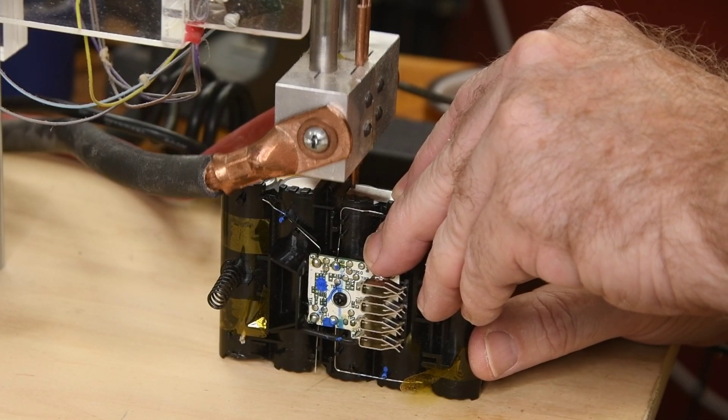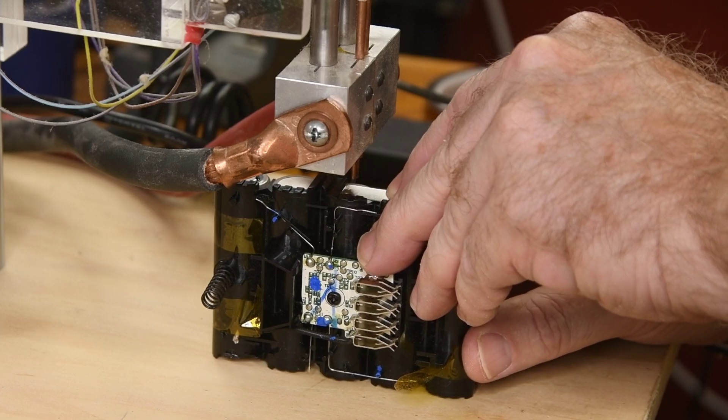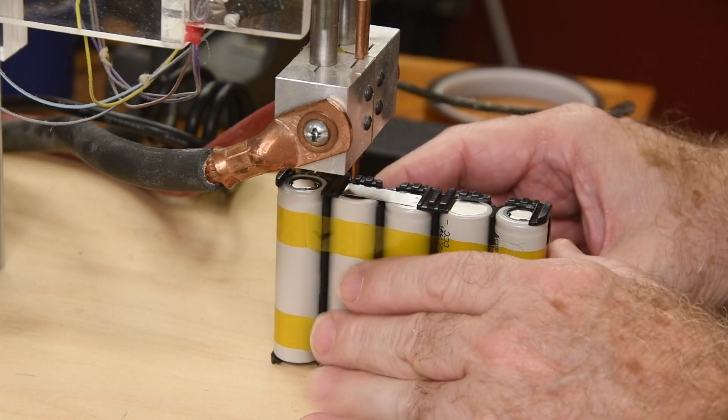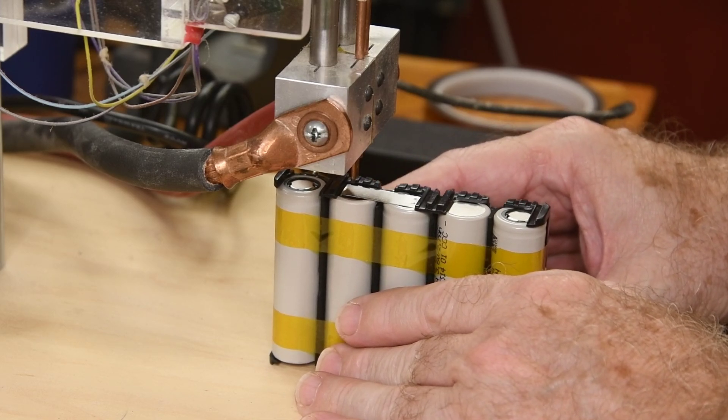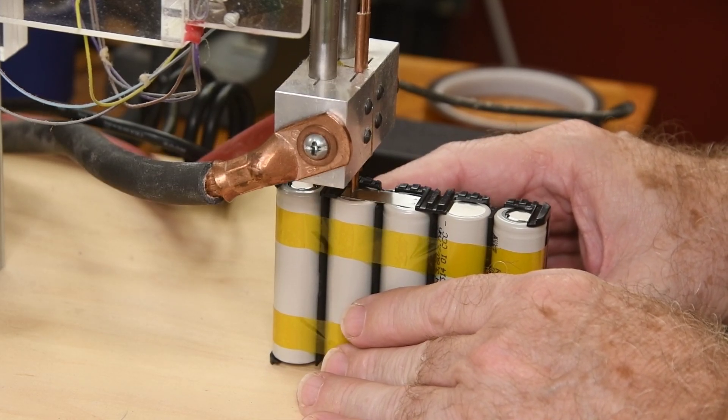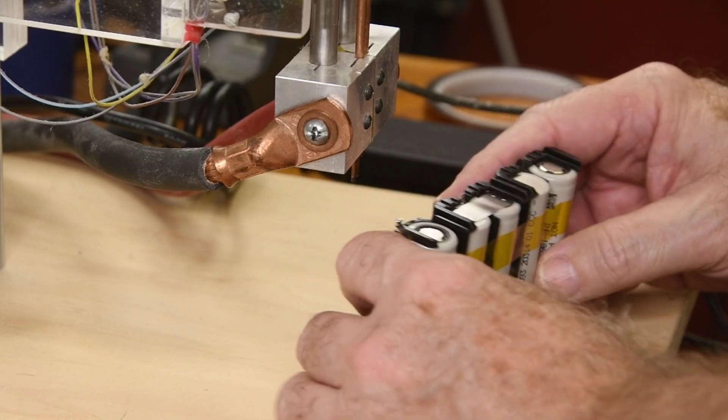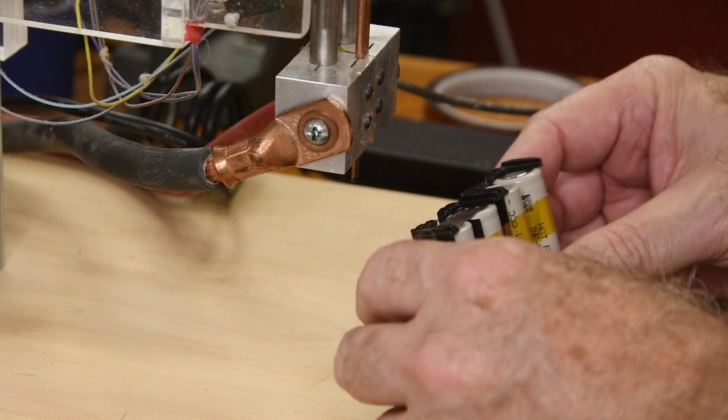The connecting tabs on the original batteries were 0.25 millimeters thick. The thickest nickel strip I have is 0.2 millimeters. The original tabs width totaled about 8 millimeters, and the strip I have is 10 millimeters. I think that makes me about even. These are not big drills, so that will be plenty of nickel area to handle the current.